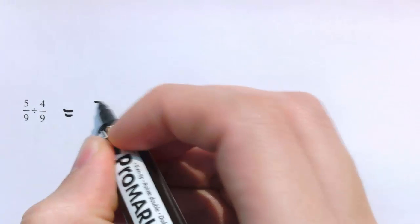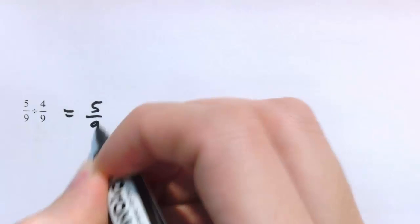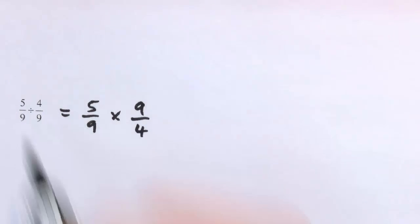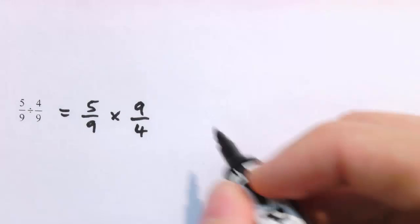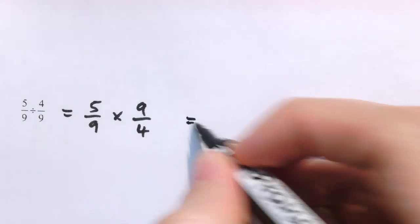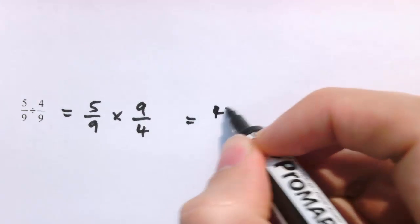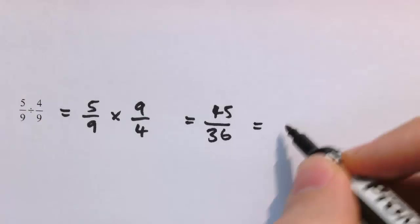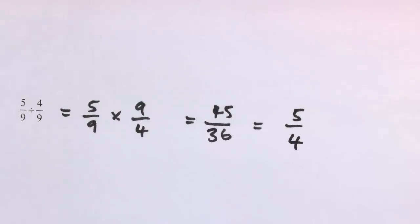For division, we just turn the second fraction upside down and then multiply. So 5/9 divided by 4/9 is 5/9 times 9/4 — turning the second one upside down and then multiplying. We get 45/36, and that simplifies down to 5/4.